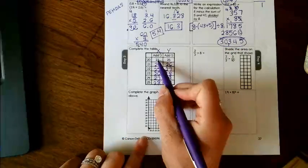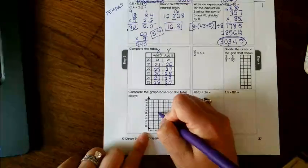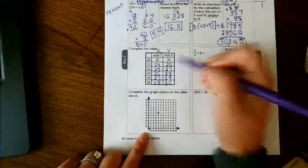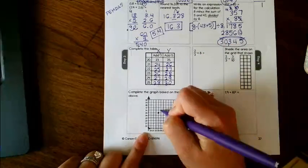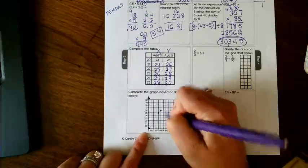So this is over 23, up to 25. Over to 24, up to 26. Over to 25, up to 27.